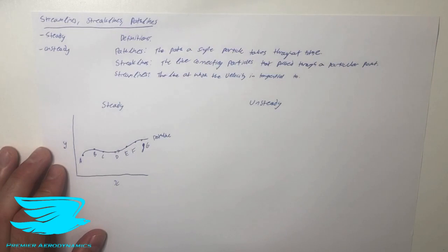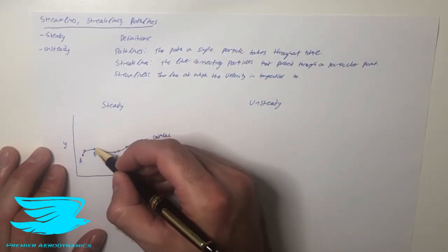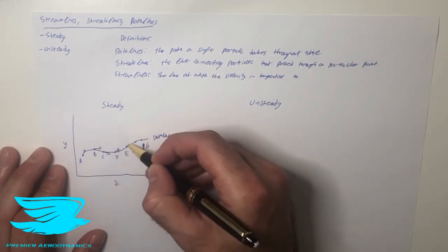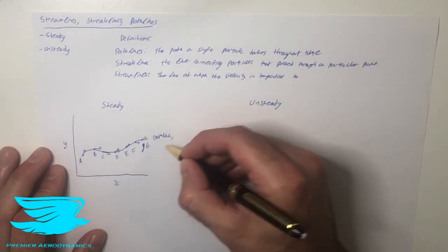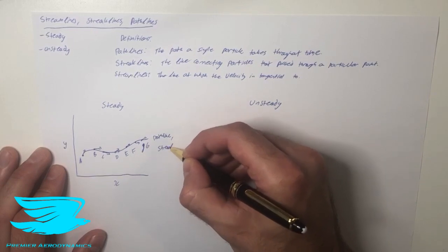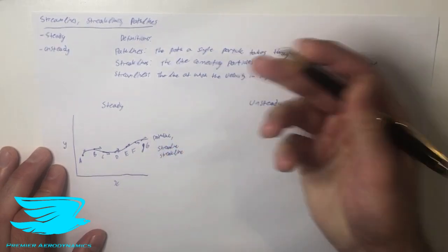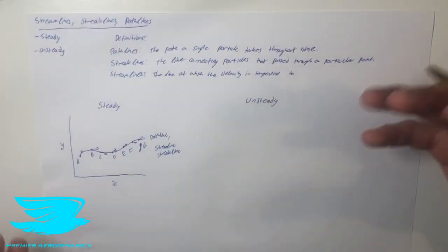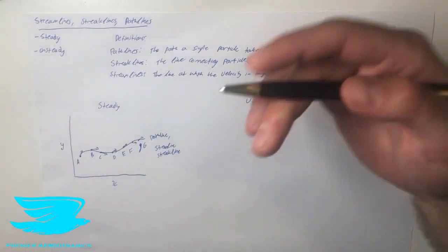A streamline as well: the velocity at each one of these points is tangential to this line, which means this pathline is also the streamline and also the streakline. So in the steady case, knowing the distinctions doesn't really make much of a difference. The path any particle takes, the streamline, and the streakline are all the same in the steady case.